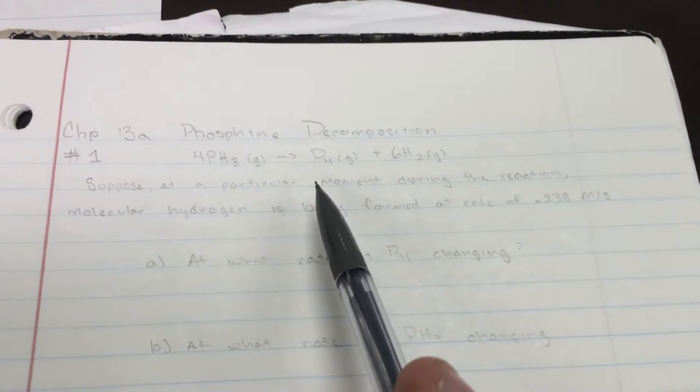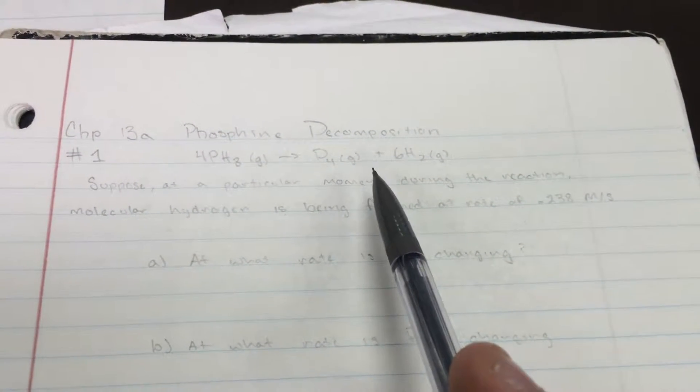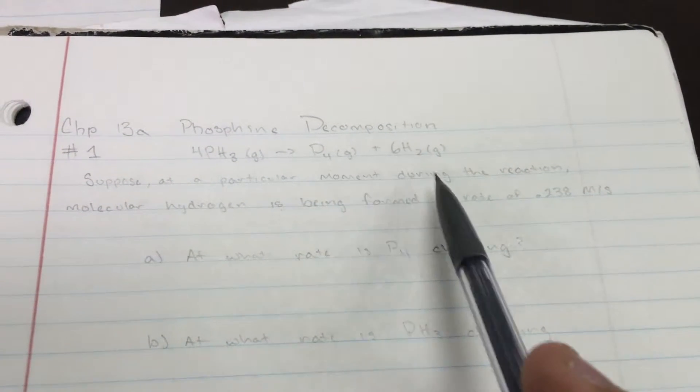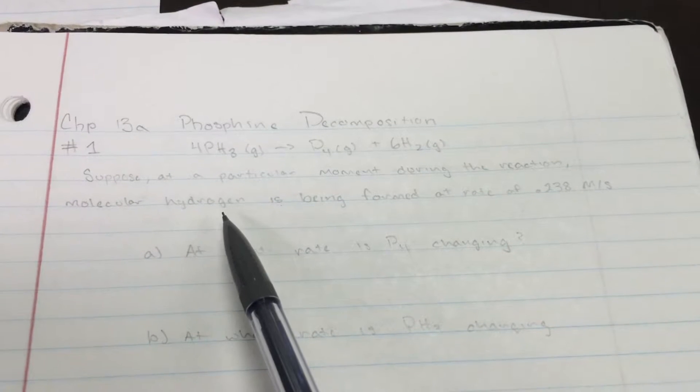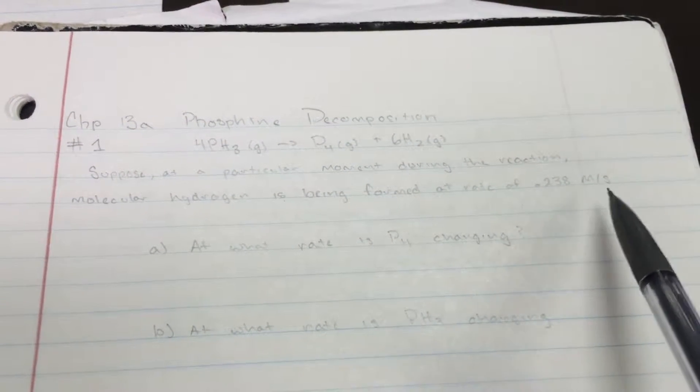Number 1. For a P4 plus 6H2 reaction, suppose at a particular moment during the reaction, molecular hydrogen is being formed at a rate of 0.238 M/s.